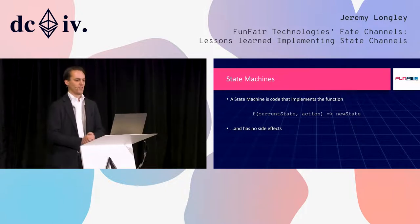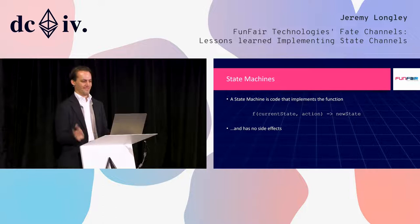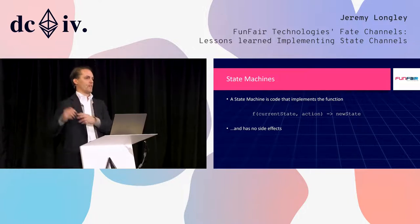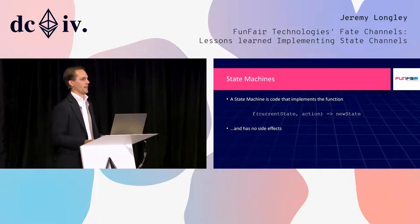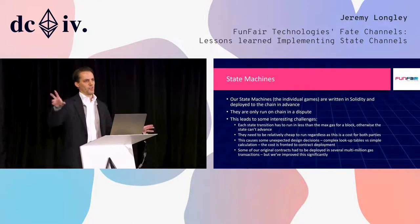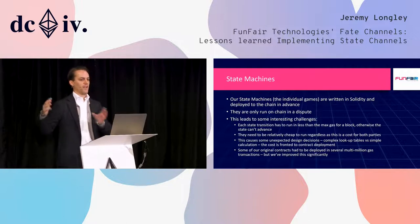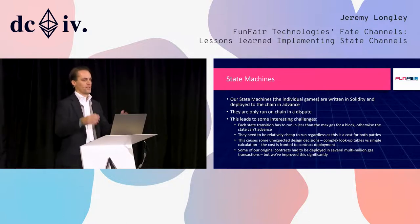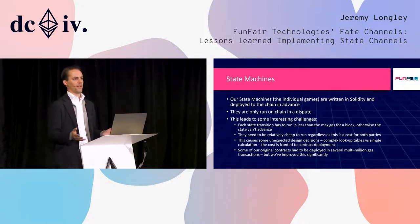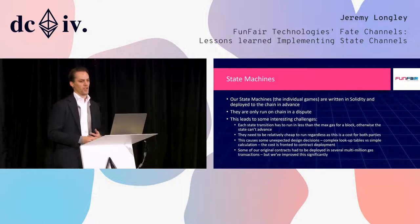A state machine is code that implements a function taking a state and an action and returning a new state — a function with no side effects, entirely self-contained. Our state machines representing individual games — slot machines, roulette, blackjack — are written individually in Solidity and deployed to the chain in advance, so you know what you're getting into when you start a contract. This leads to some interesting challenges.